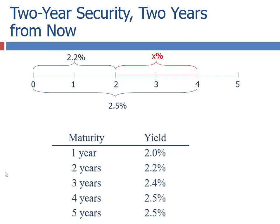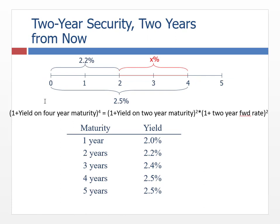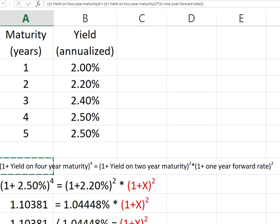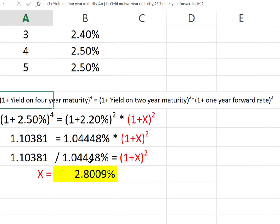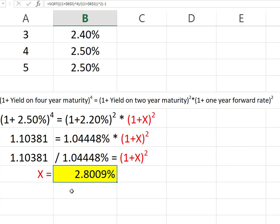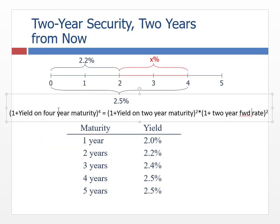We go to Excel and apply the formula: one plus the yield on the four-year (2.5%) to the fourth power should equal one plus the yield on the two-year (2.2%) squared, times one plus the two-year forward rate squared. We don't forget to take the square root of the entire term, since this is one plus X squared. Finally we get 2.8%. So that would be the expected rate for the two-year forward — we expect to make 2.8% over the first year and 2.8% over the second year as well. This is the pure expectations hypothesis.